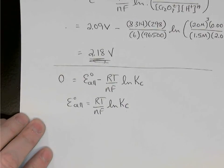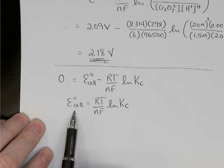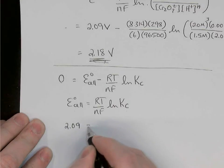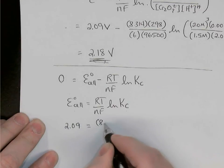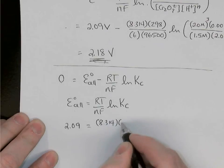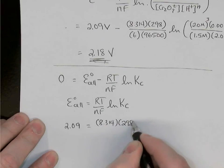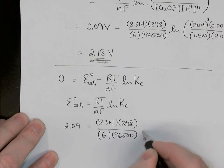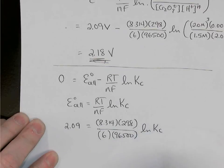So we knew that E0 was 2.09 volts. That's equal to 8.314. Our temperature was 298 Kelvin. N is still 6. And 96,500 is the Faraday times ln Kc.